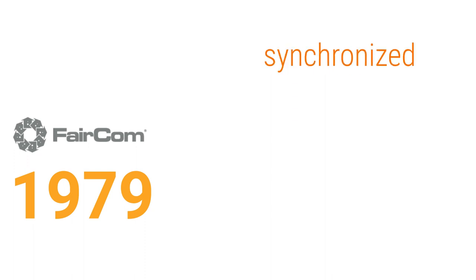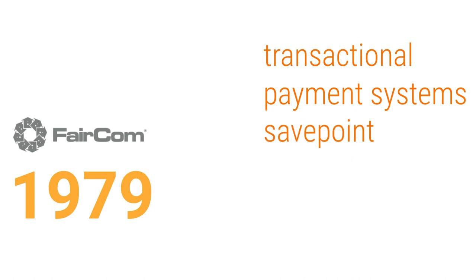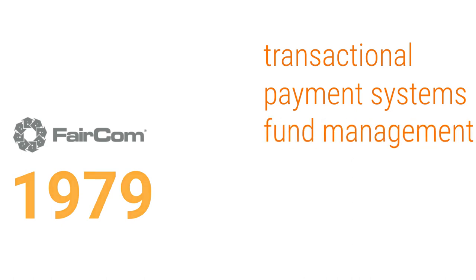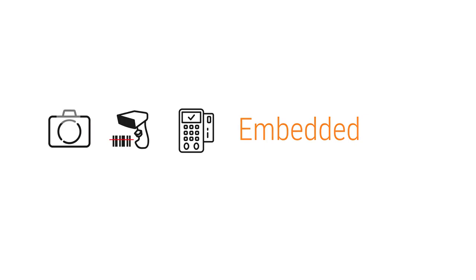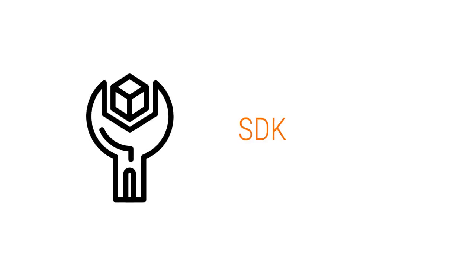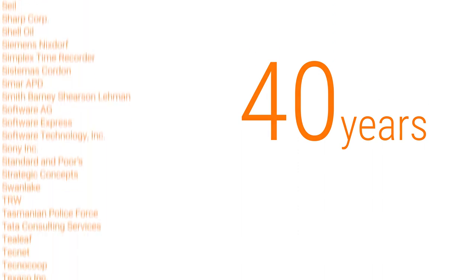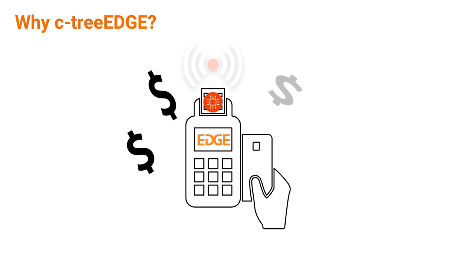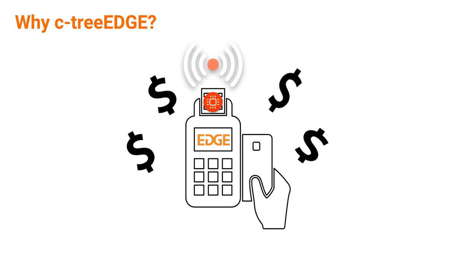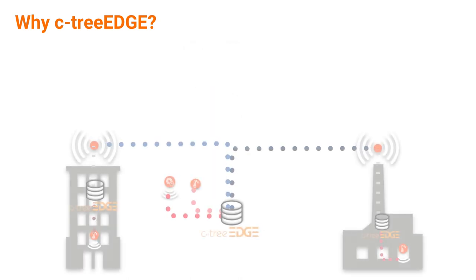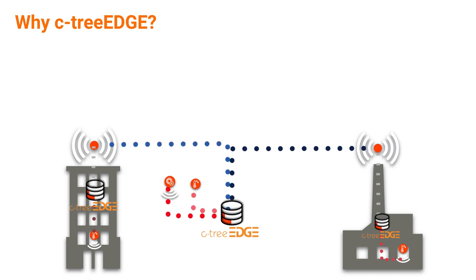We have applications like payment systems and fund management — we do what other databases usually cannot. Among those systems, we have always been involved with embedded systems like POS terminals, scanners, and cameras. Our database has always been packaged as an SDK, and over our 40 years of existence we have thousands of customers around the world — many use our technology to control robots or machines, or run as firmware. We have customers using our database inside point-of-sale systems all around the world.